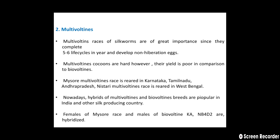The Mysore multi-voltine race is reared in Karnataka, Tamil Nadu, and Andhra Pradesh, while the Nistari multi-voltine race is reared in West Bengal. Nowadays, hybrids of multi-voltine and bi-voltine breeds are popular in India and other silk-producing countries.